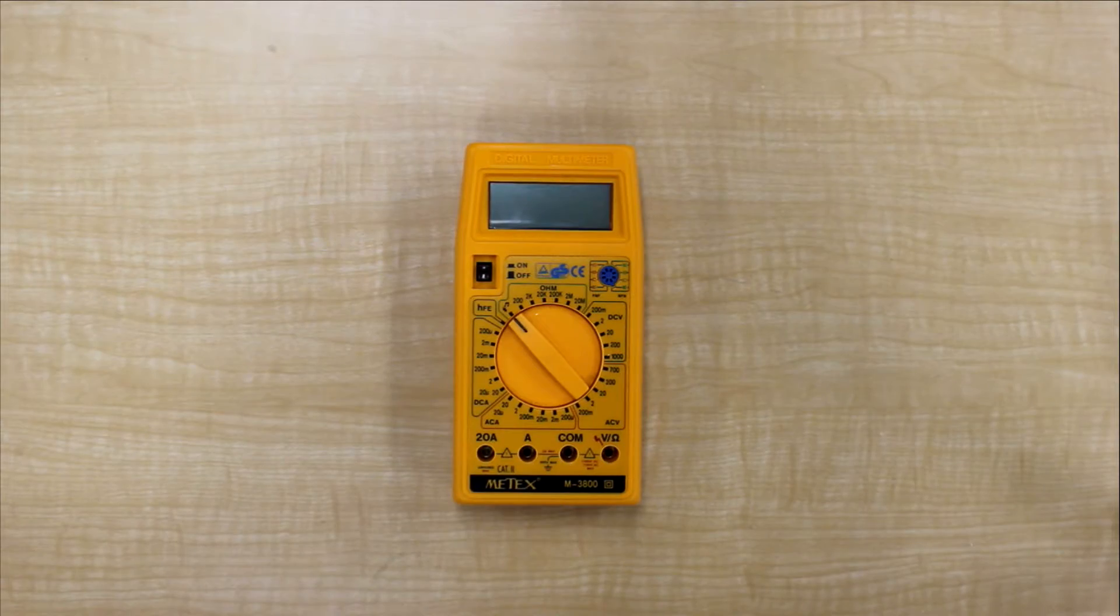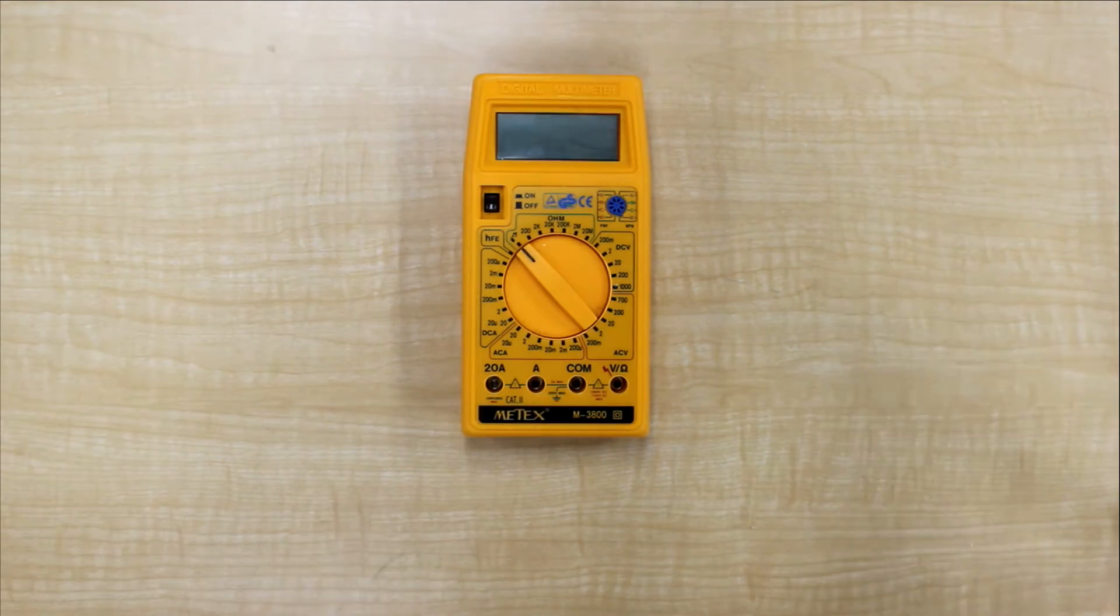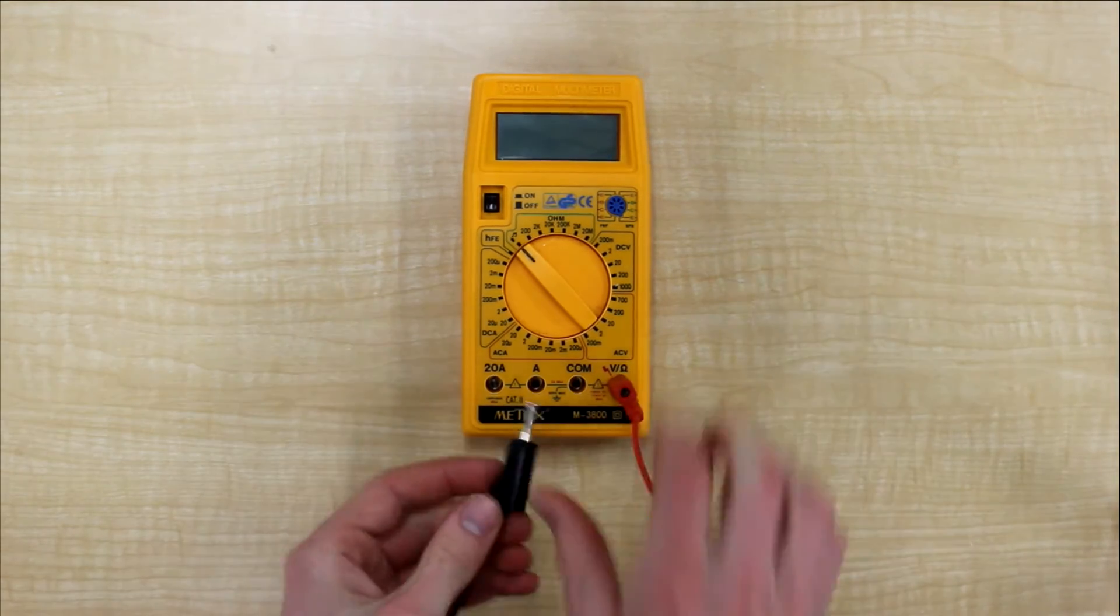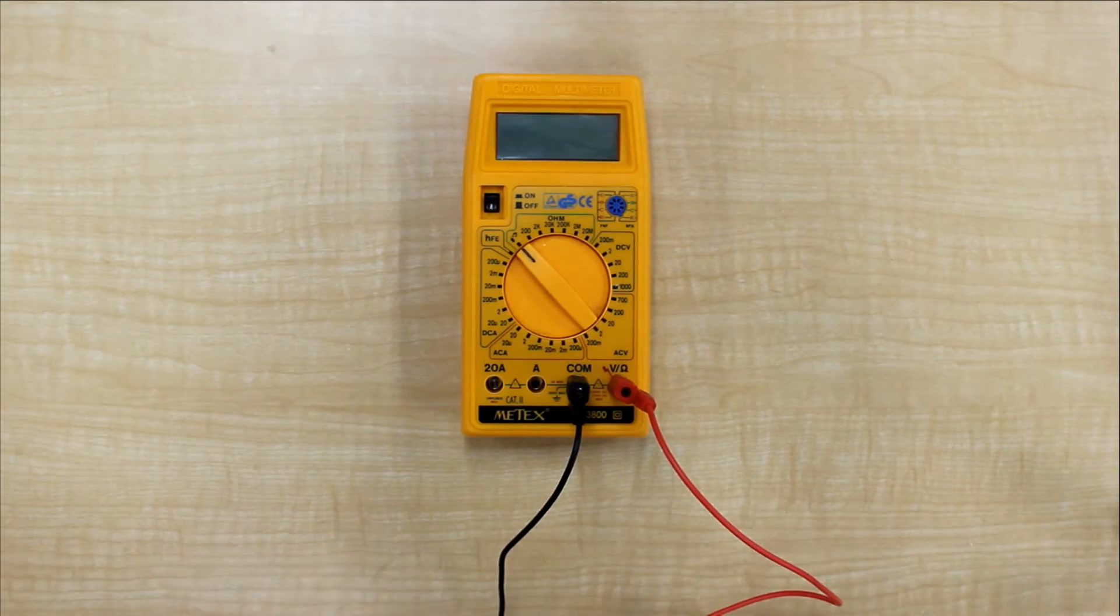To measure resistance using the multimeter, we will take the multimeter, two alligator clips that can plug into the multimeter to the VCC and the COM, and then we will take a resistor.